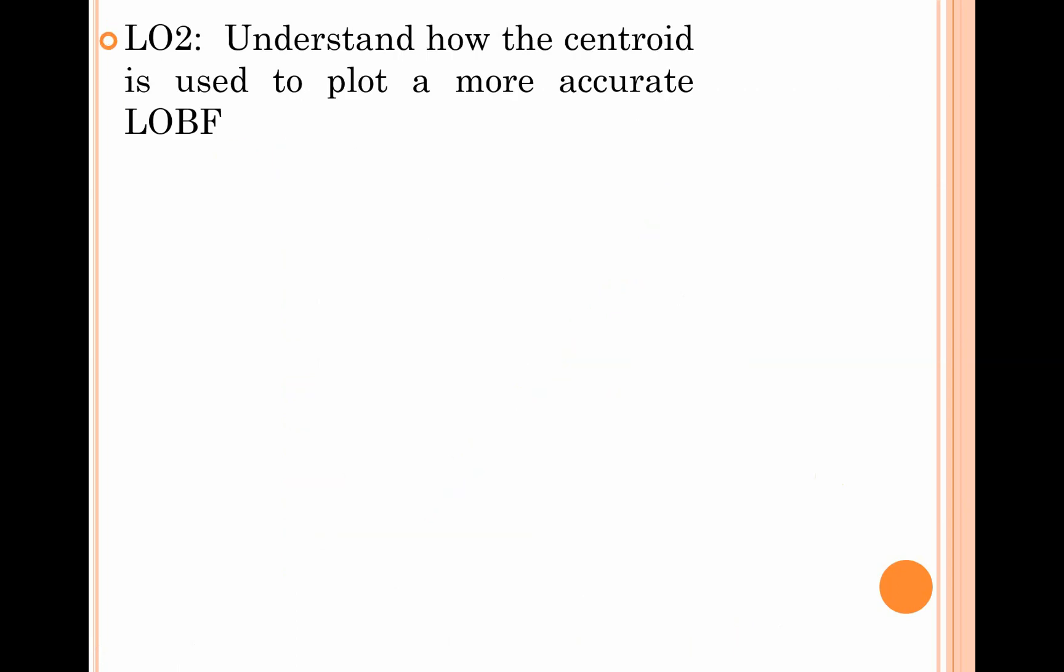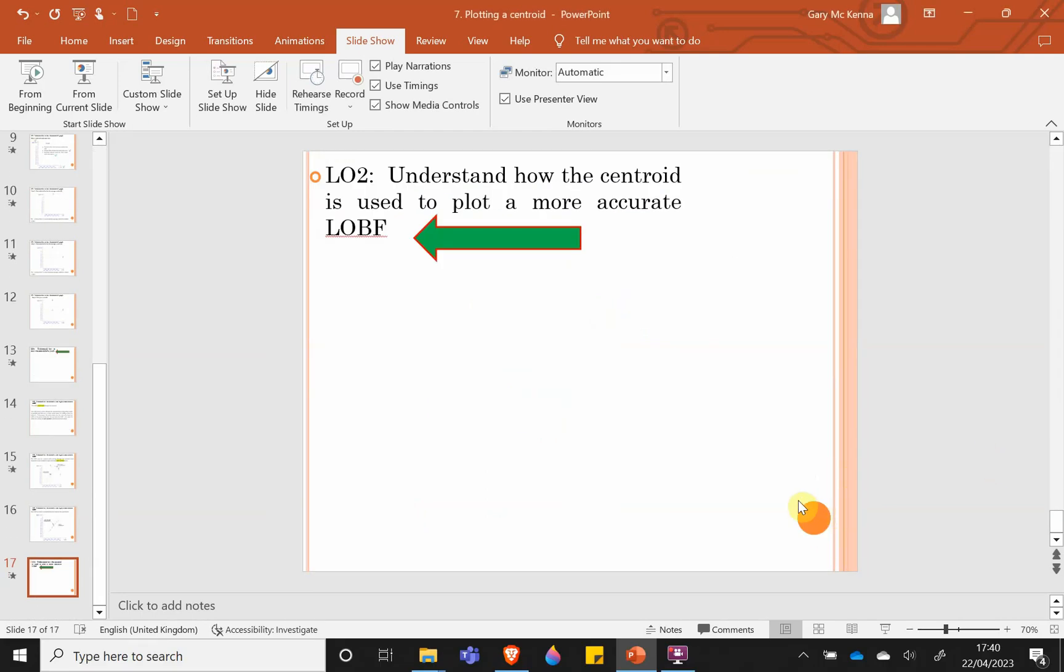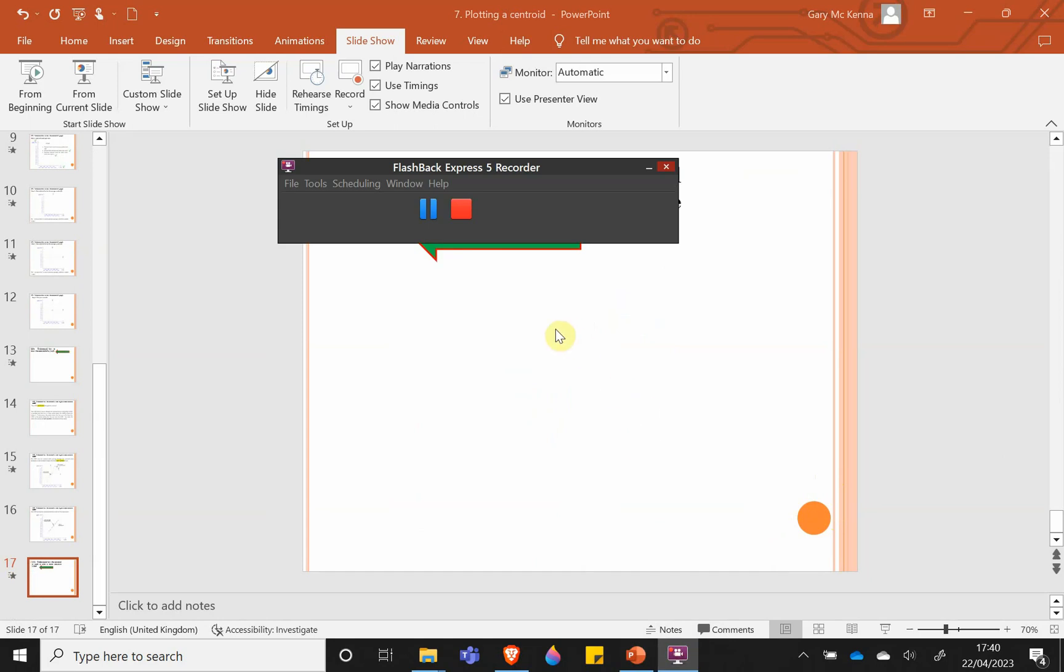That takes off learning objective two, where you now hopefully understand the benefits of using that centroid to give you the most accurate line of best fit for your experimental results. That concludes this video tutorial. Do check out the next two videos where we look at how we can use this centroid to get the uncertainty in both the gradient and the y-intercept.